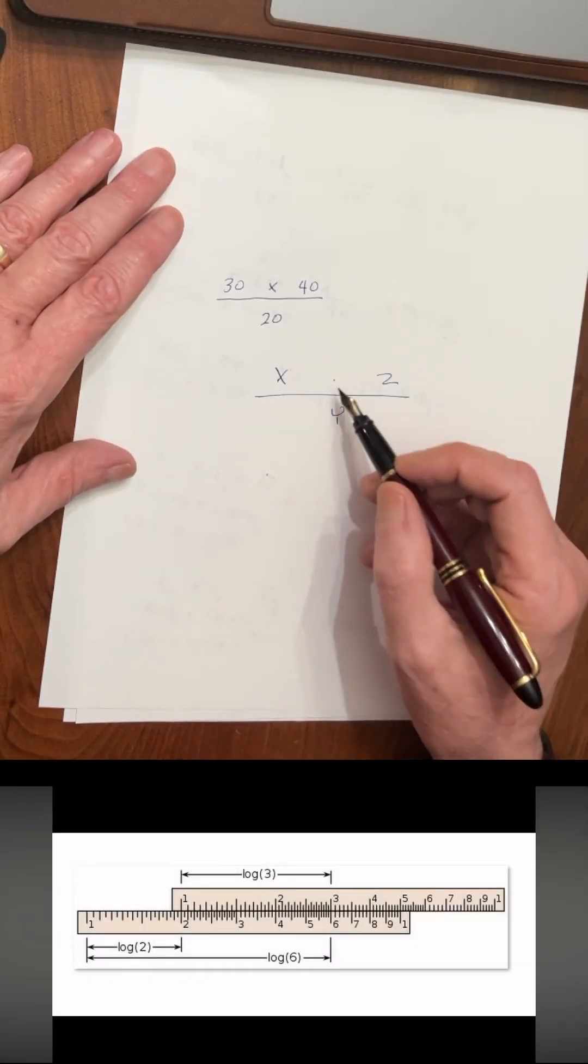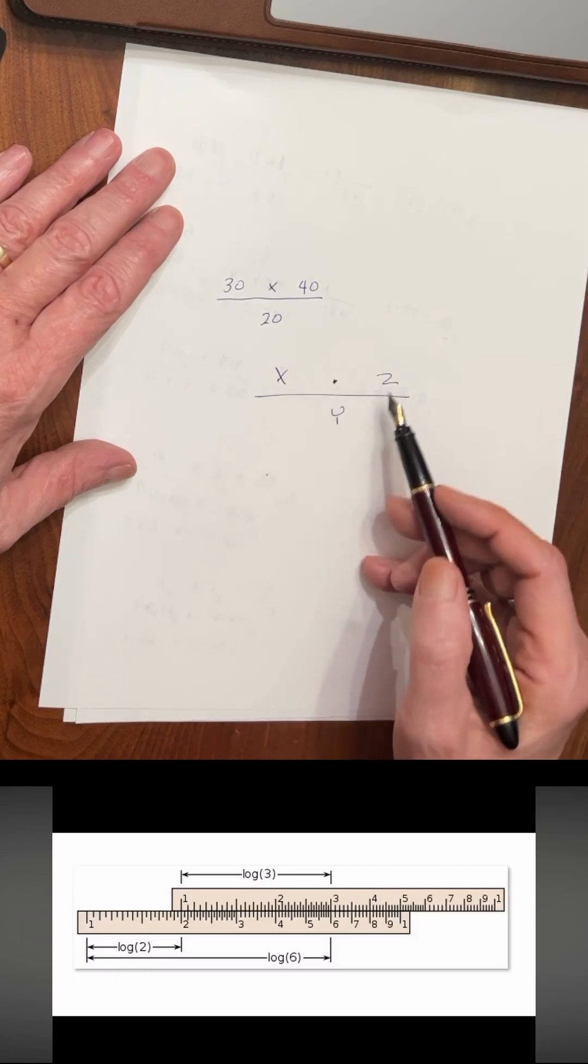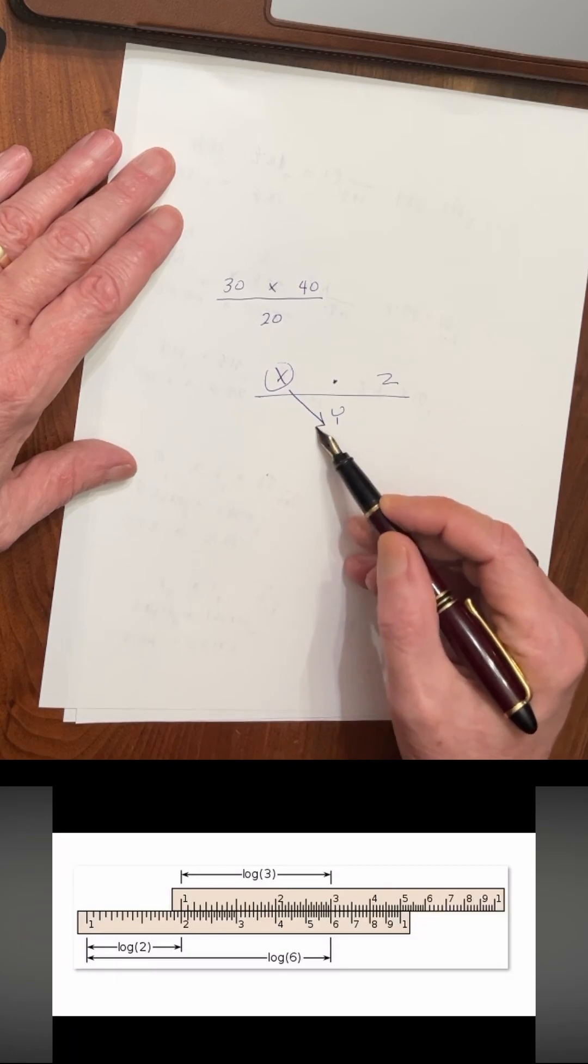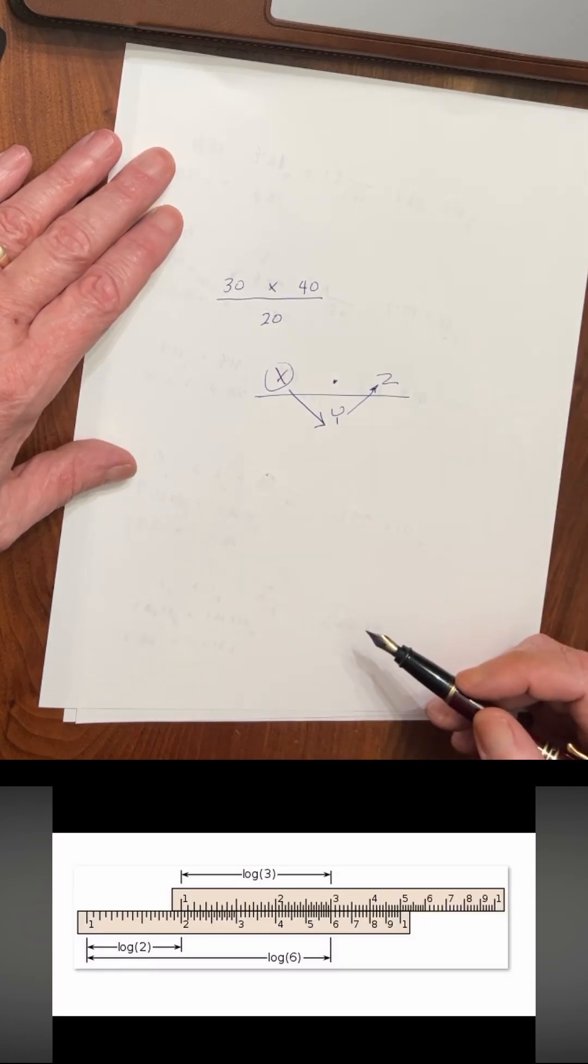So when you're dealing with 3 numbers, 2 of which are multiplied and 1 is divided, you start here. You move here. You move here. Then you go here. You cross back and forth.